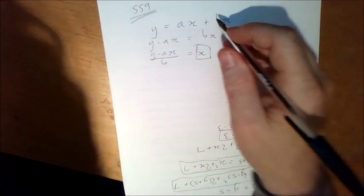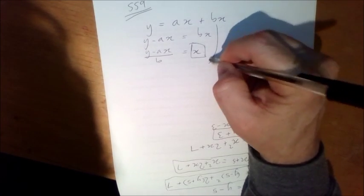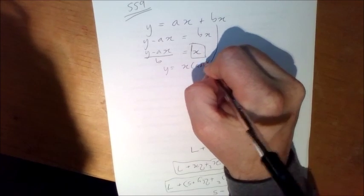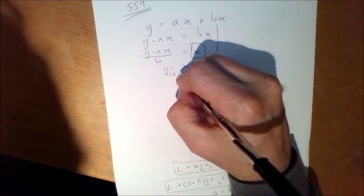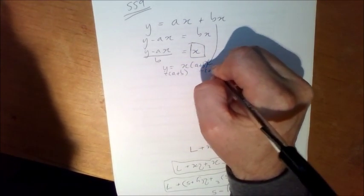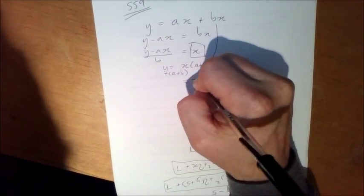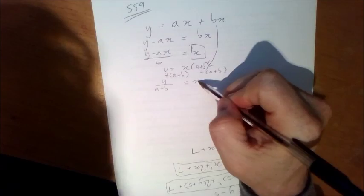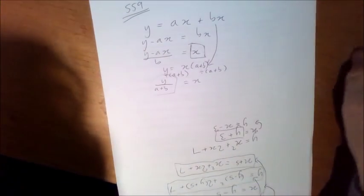So you need to think again. And the way to think again is to factorise this. Now divide both sides by a plus b. And now you do have not only x by itself but no mention of x on the other side.